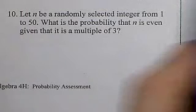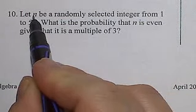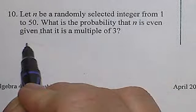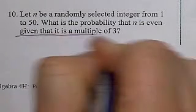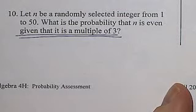We randomly have numbers 1 through 50. What is the probability that n, which is a randomly selected number from 1 to 50, is even given it's a multiple of 3? Please underline this. This is the key part. This tells you where to start. So this tells you write down all the multiples of 3 from 1 to 50.